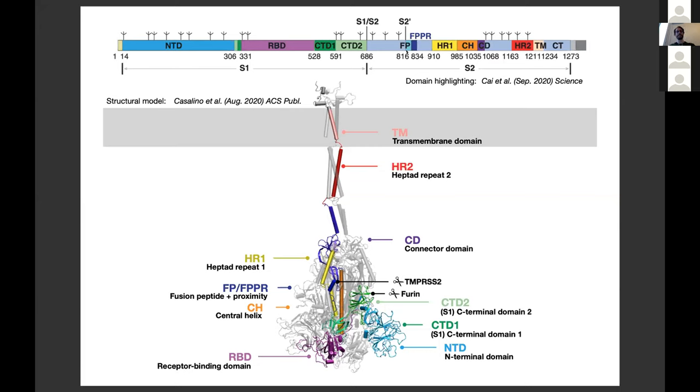The S2 region begins with the fusion peptide, which inserts in the host cell membrane, followed by a linker region and the heptad repeat 1, which are these two helices in yellow. This is followed by the central helix, then a connector domain which connects to the stem of the protein where we find the heptad repeat 2, which has very high binding affinity for the heptad repeat 1 region, and then the transmembrane domain and small endodomain.